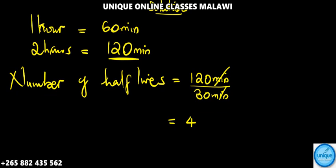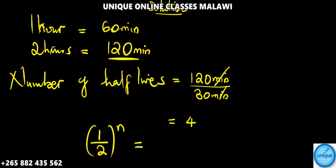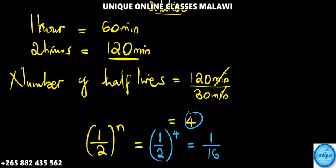Since we are using the half-life formula, the formula we use is (1/2)^n, where one-half represents one half-life and n is the number of half-lives. So the fraction remaining after 120 minutes is (1/2)^4. Two raised to the power of 4 is 16, so the fraction remaining after 120 minutes is 1/16.